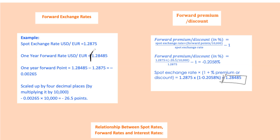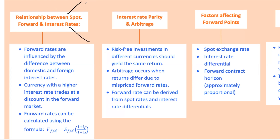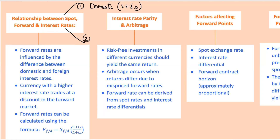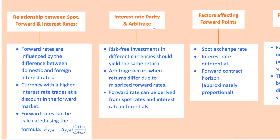When we talk about the relationship between spot rates, forward rates, and interest rates, there are two main alternatives for an investor. First is to invest at the domestic risk-free rate and grow your investment to one plus the domestic rate. Second is to convert domestic currency to foreign currency at the spot rate, invest at the foreign risk-free rate, and then convert back using the forward rate, eliminating FX risk. These two alternatives should yield the same return if they have the same risk characteristics; otherwise, arbitrage opportunities arise.